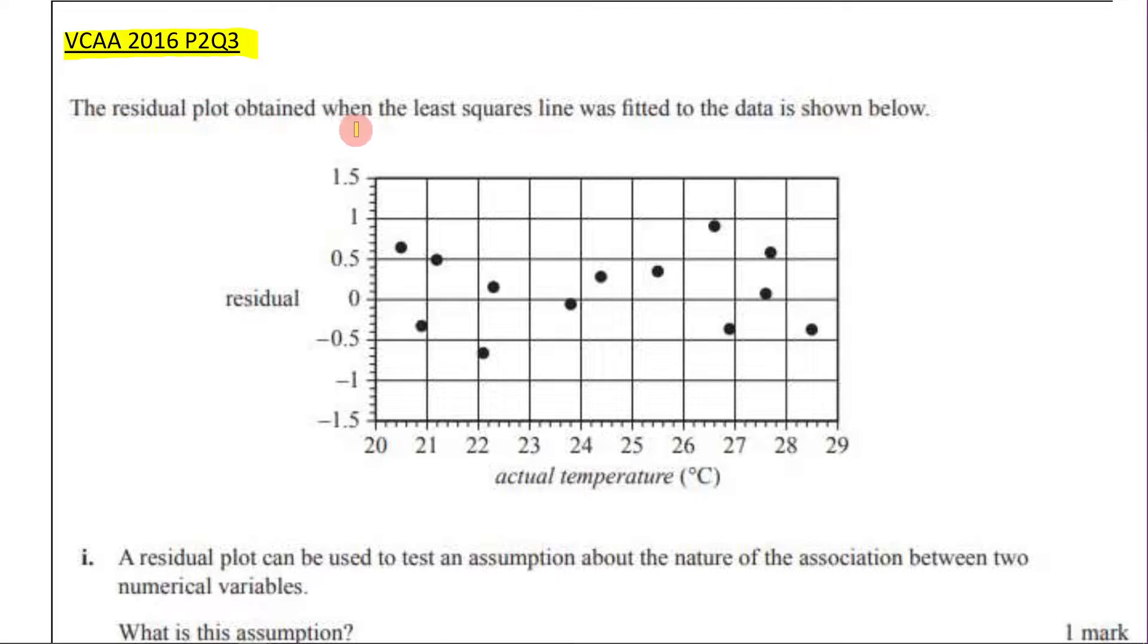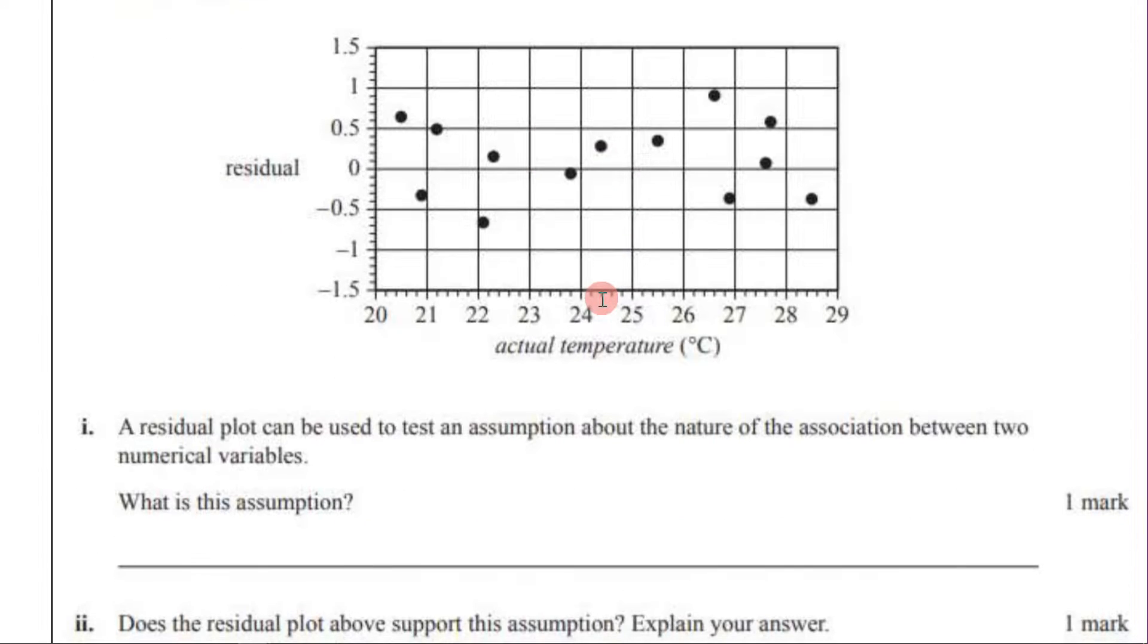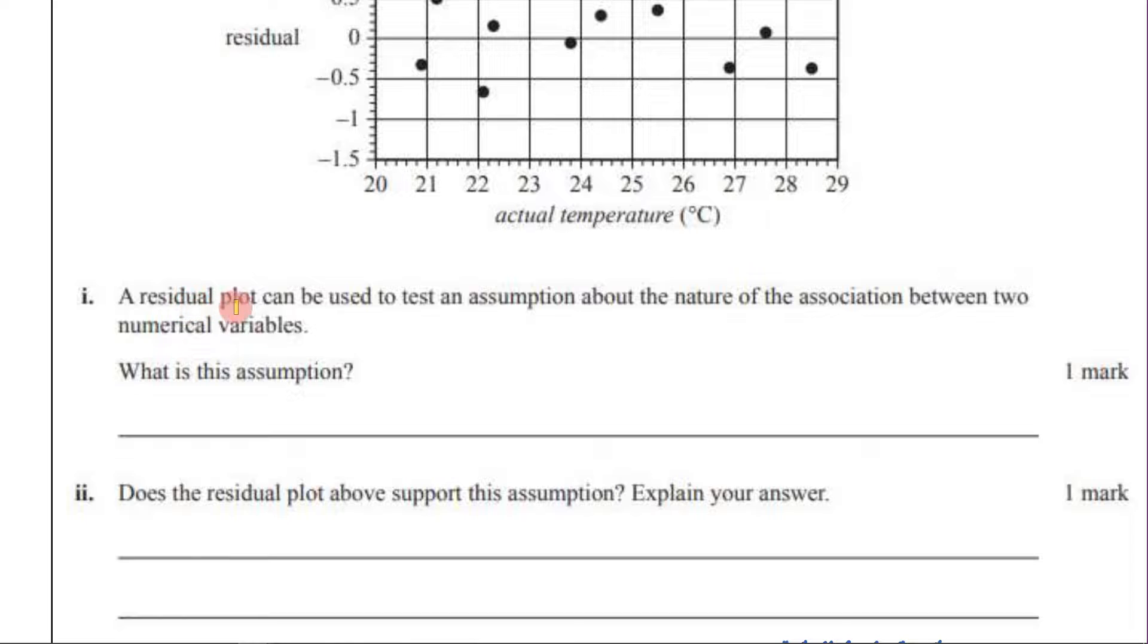The residual plot obtained when the least squares line was fitted to the data is shown below. So here is our residual plot. Then we read, a residual plot can be used to test an assumption about the nature of the association between two numerical variables. What is this assumption?